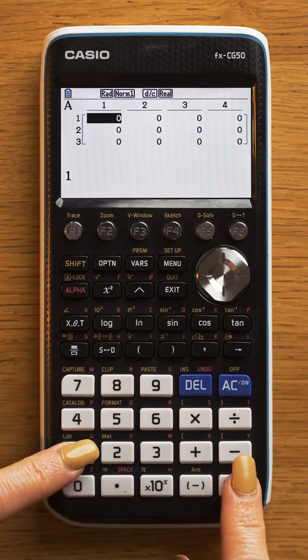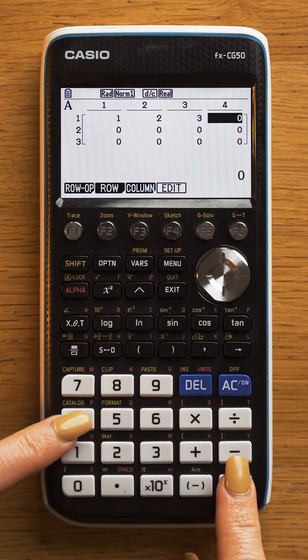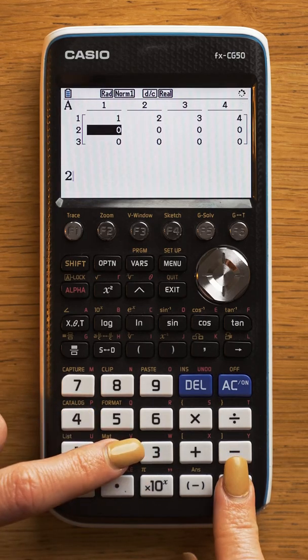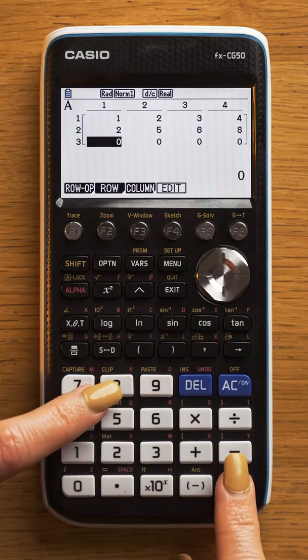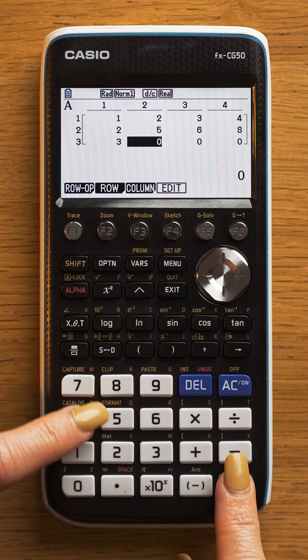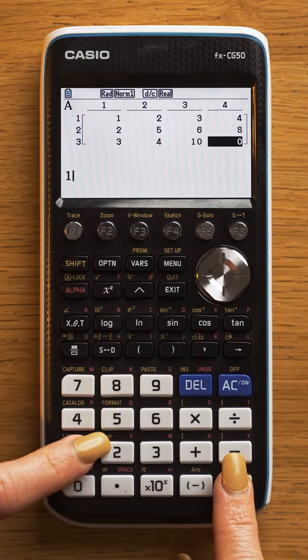I'm going to enter the equations of my planes: 1x plus 2y plus 3z equals 4, 2x plus 5y plus 6z equals 8, and 3x plus 4y plus 10z equals 12.